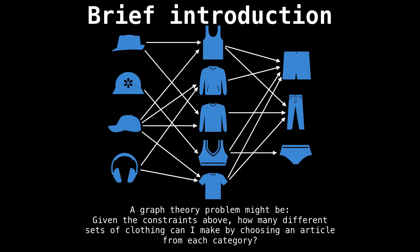A simple problem that can be phrased as a graph theory problem might be: given the constraints in this picture, how many different sets of clothes can I make choosing an article from each category? Of course, this could be phrased and solved using only mathematics. But the advantage to graph theory is that it allows us to visualize the problem using nodes to represent an article of clothing and edges to represent relationships between them.